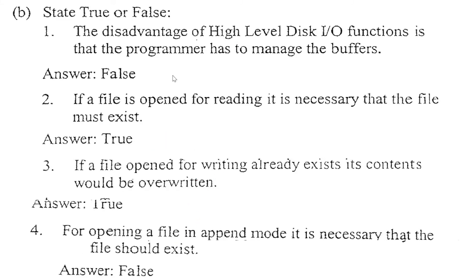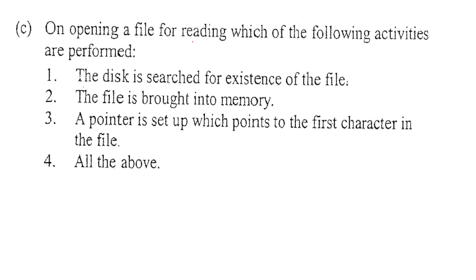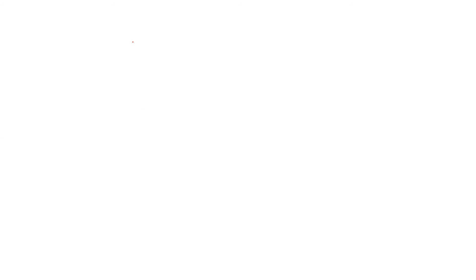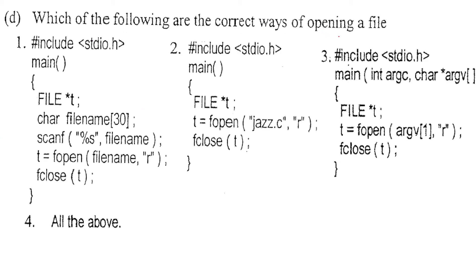On opening a file for reading, which of the following activities are performed? The answer is: the disk is searched for existence of the file, the file is brought into memory, and a pointer is set up which points to the first character in the file — so all of the above is the answer. For the correct ways of opening a file, we have a file pointer using command line, scanning the file name with scanf, or taking the file name from command line arguments and opening in read mode — all of the above is correct.